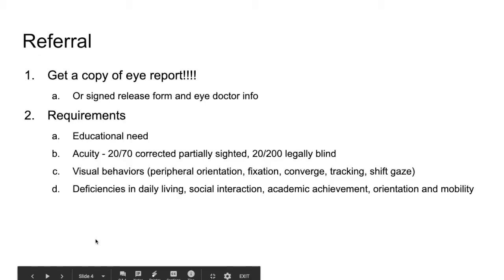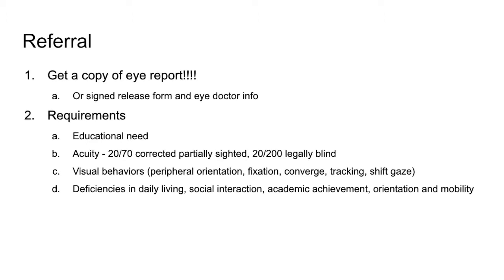So let's begin with the referral process. Number one: get a copy of that I-Report. Part of the requirements is that there has to be a verified visual condition, so we would need that I-Report as part of the referral and evaluation process, and it's really hard to proceed without it. You can get me a copy, or if you want me to request it, I just need a signed release form from the parent — that form is on the ESU website under Special Ed Department under Forms, or you can email me and I'll send it to you. Then give me the contact information for the eye doctor and I can request that report.